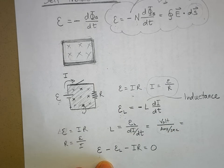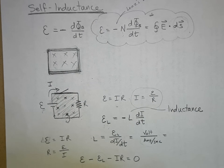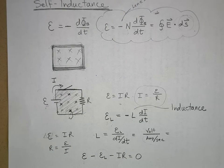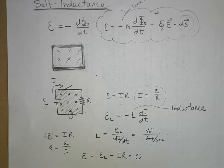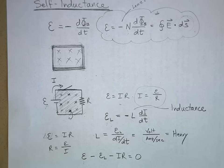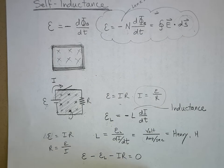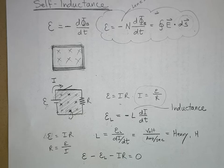The unit of inductance is a volt per amp per second, and we have a name for it: it's called the Henry, abbreviated H — named after an American physicist, and possibly the only unit of measure named after an American. So inductance is measured in Henries.